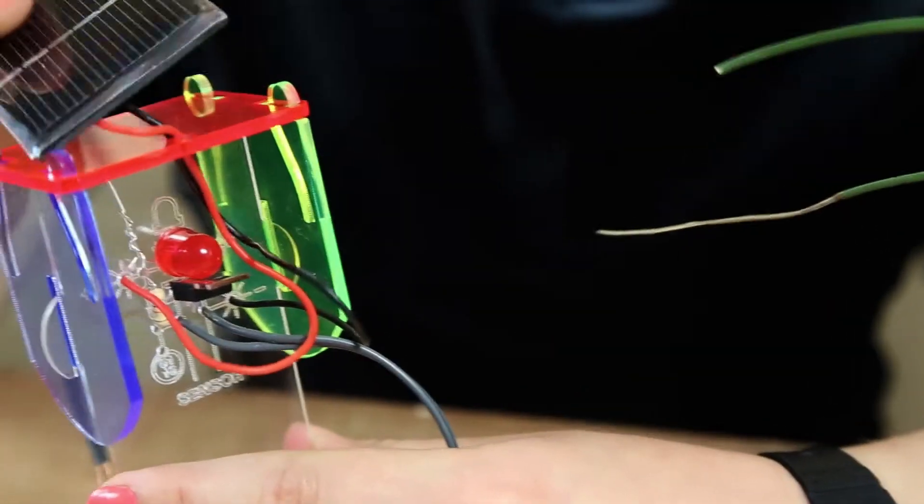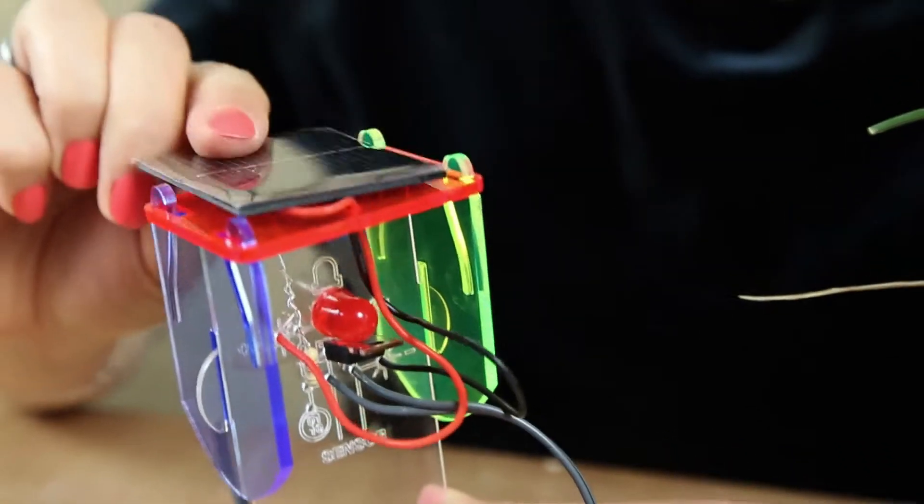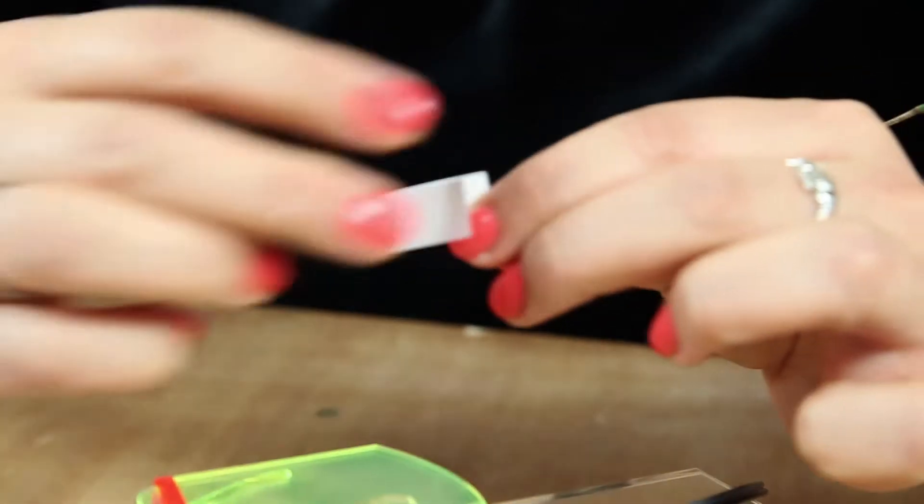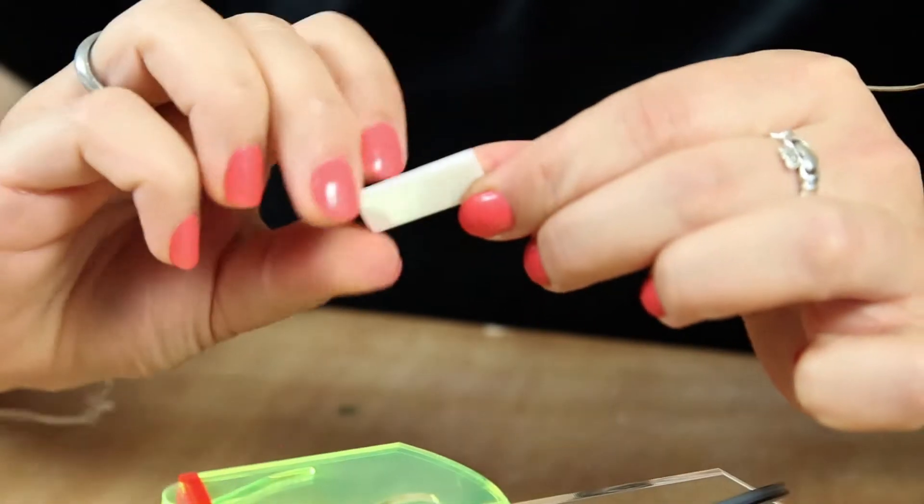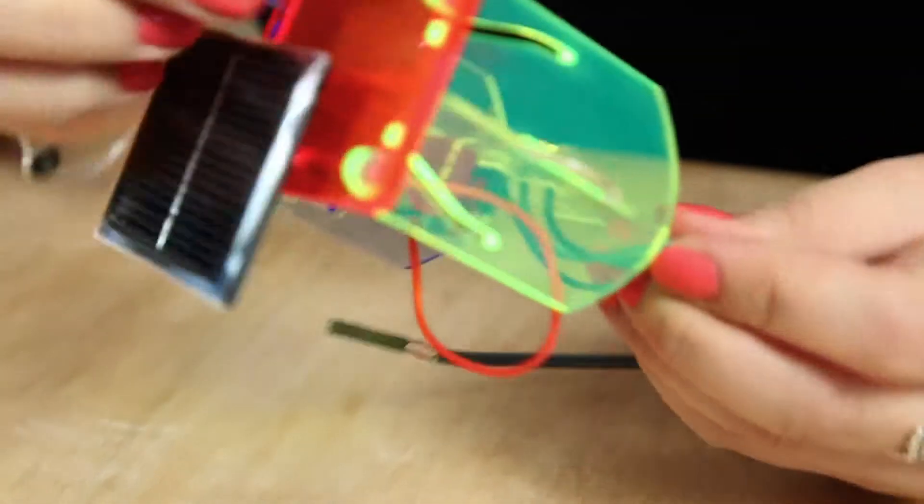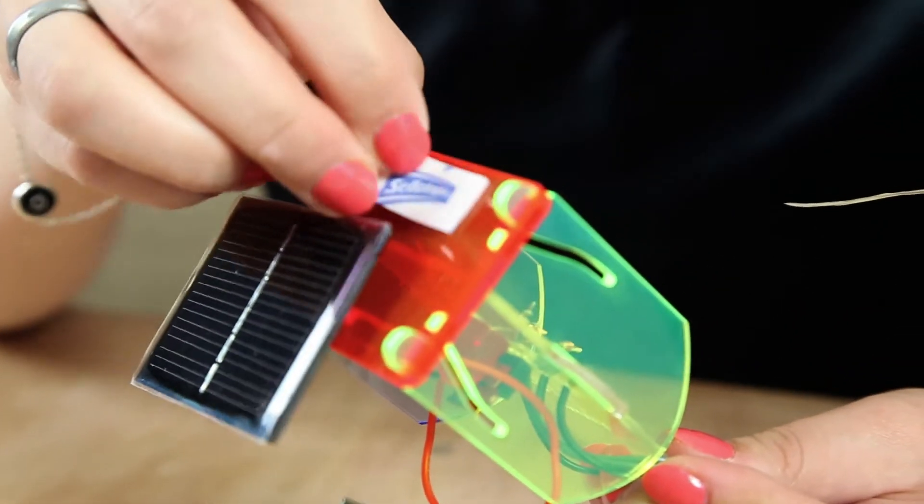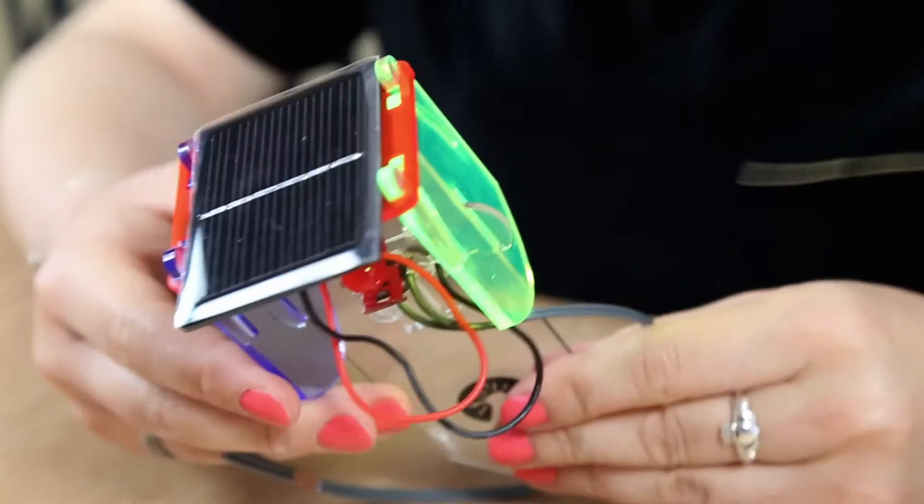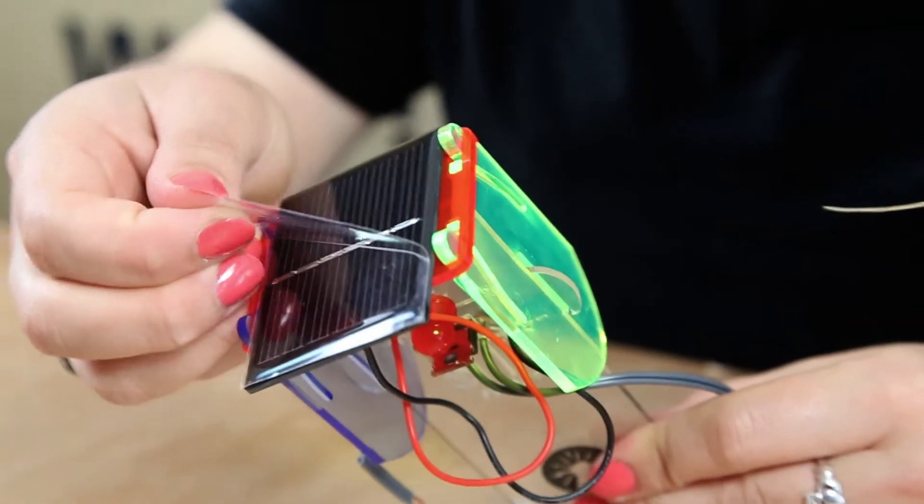So now you want to secure your solar panel onto the top red bit. So if we just take one part of the sticky off like that, and press it onto the lid and in place. And we also want to make sure that we take the film off the solar panel because this makes the solar panel more efficient.